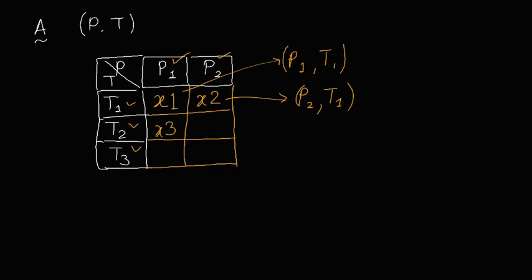Then we have X3, X4, X5, X6. Now this X6 we can see that it is P2 and T3.